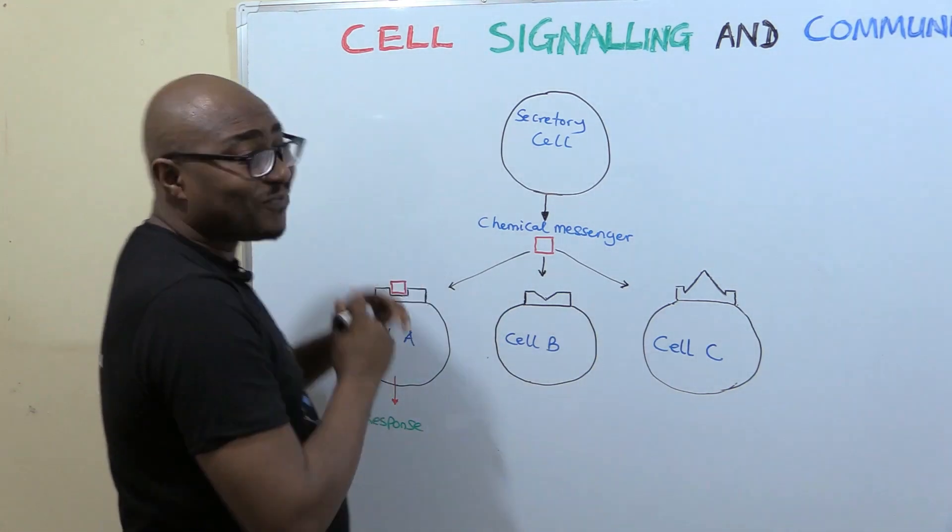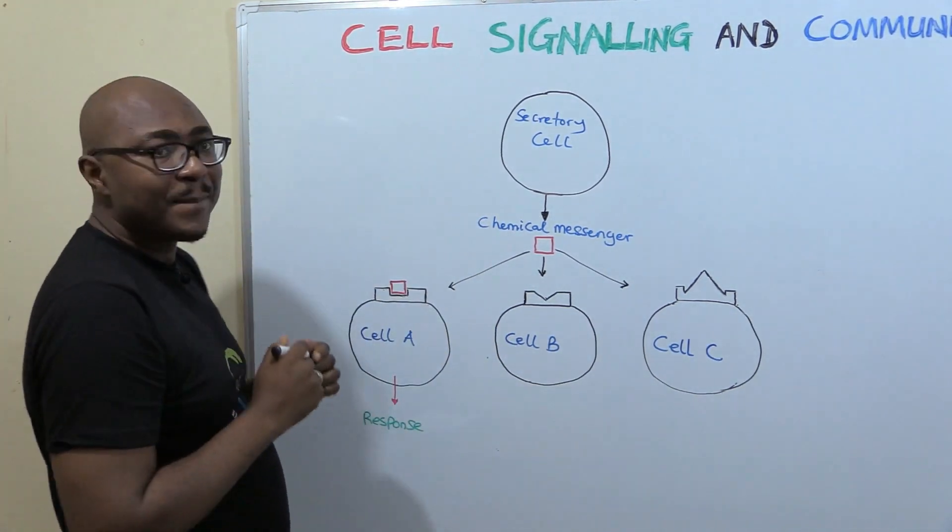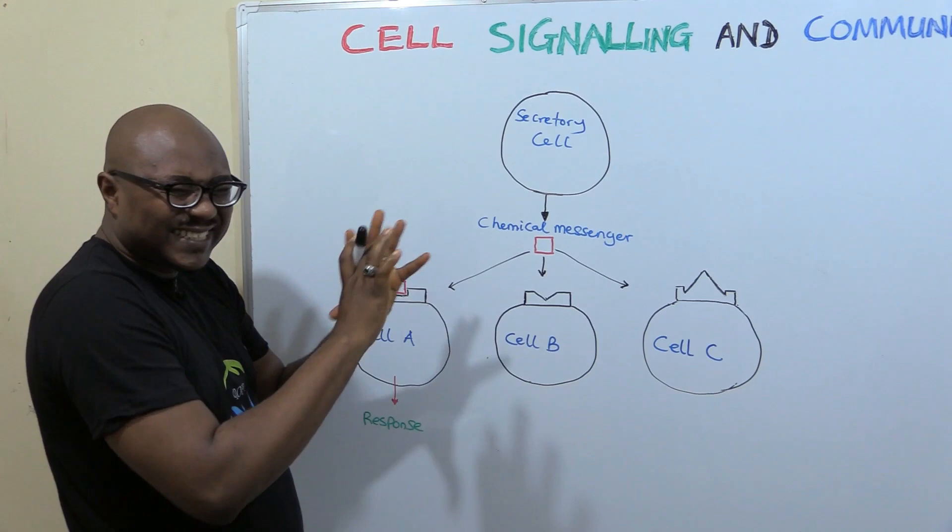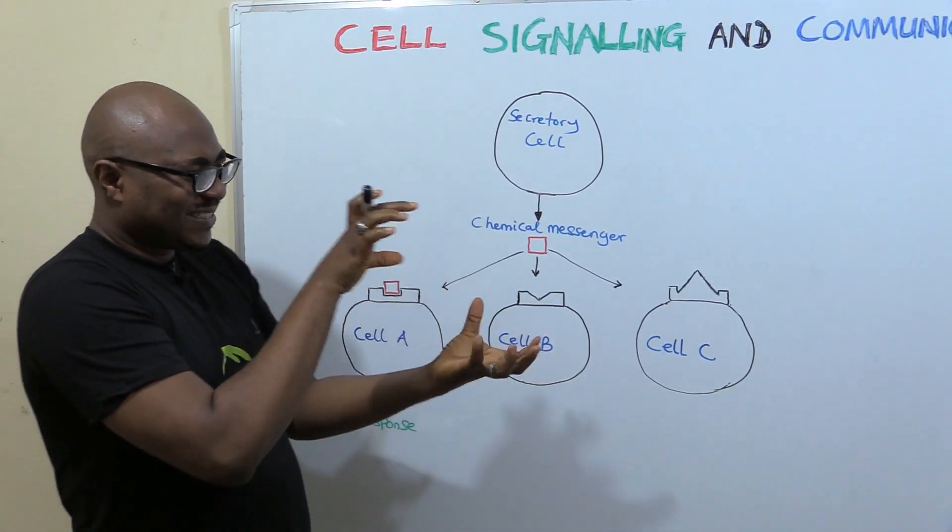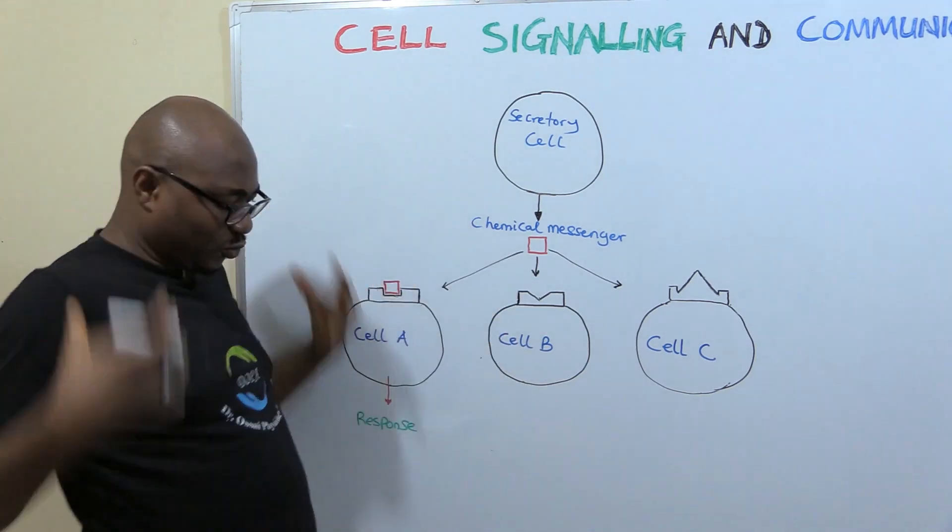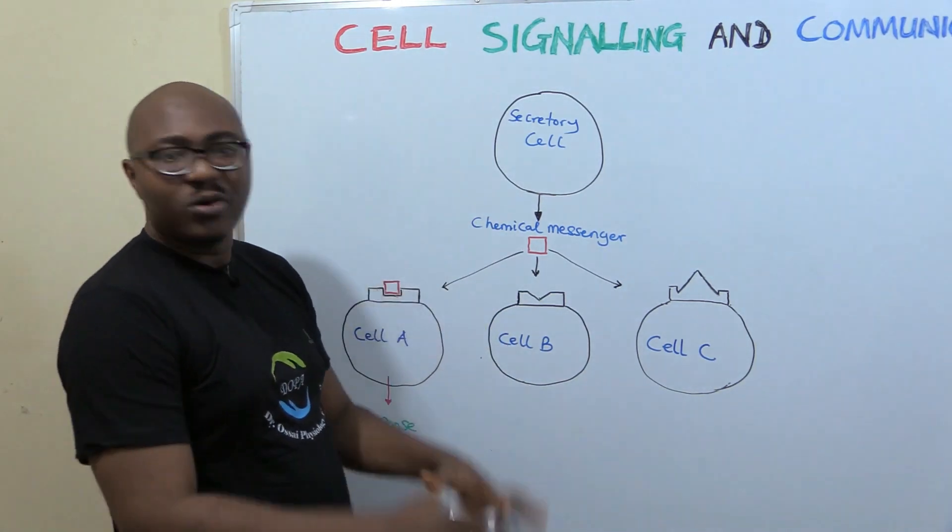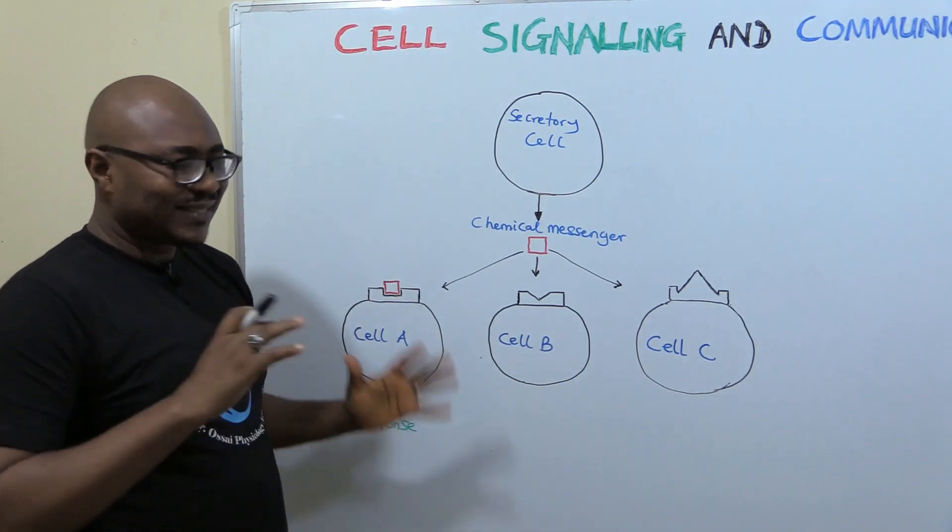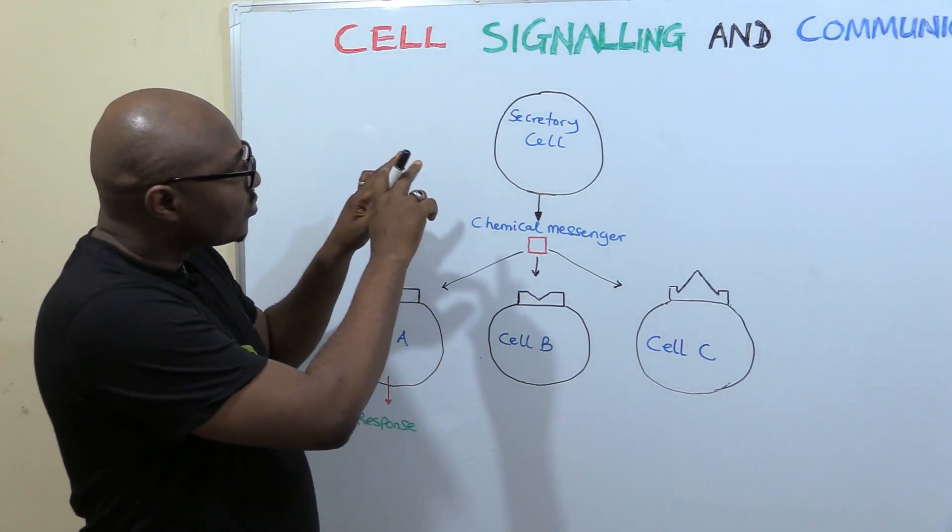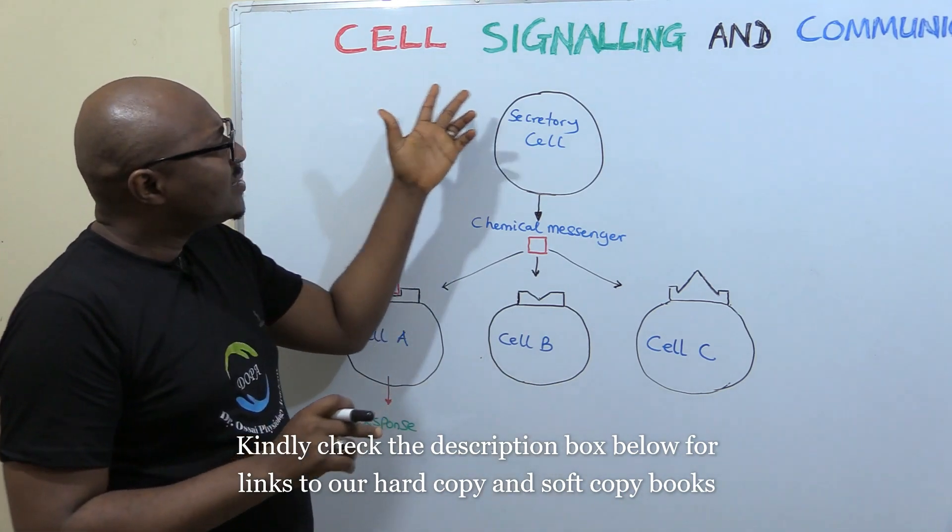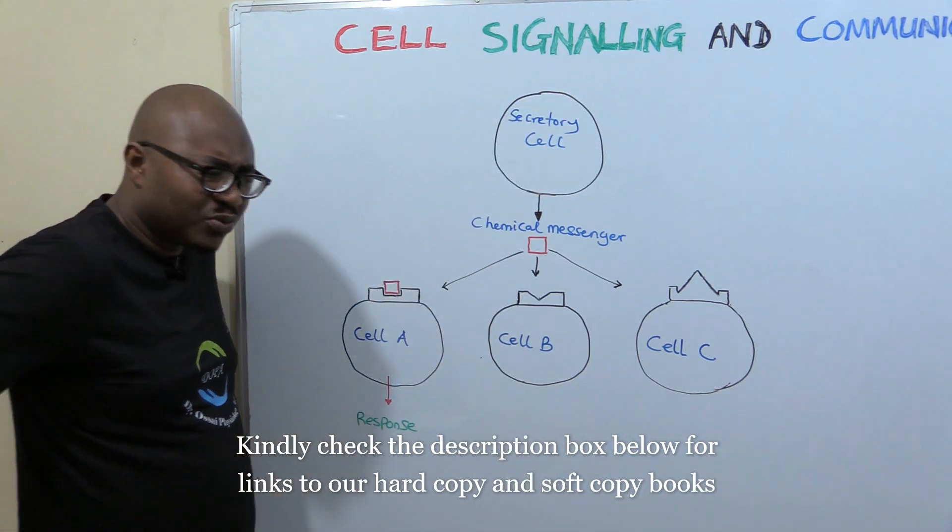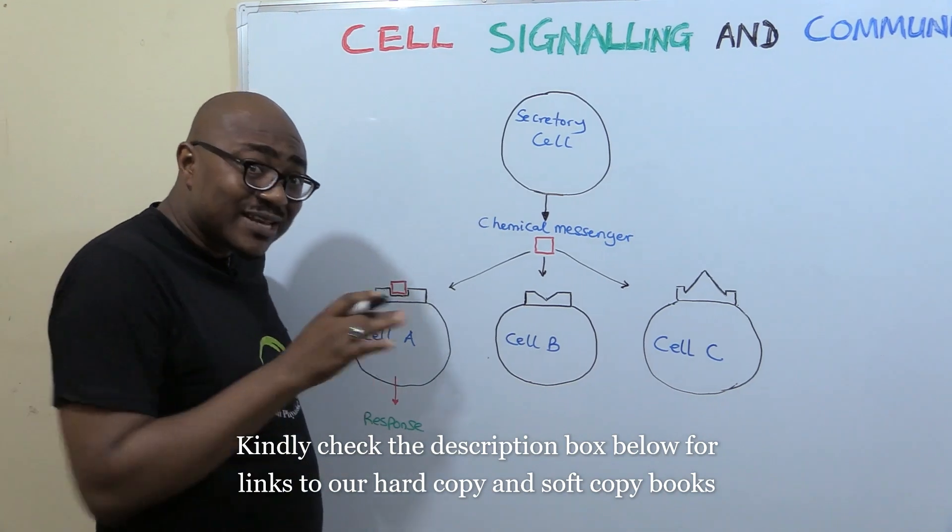All right, let's get started. So today we're going to be dealing with something very vital to physiology, cell physiology. When we're looking at physiology, we look at it from the cellular perspective and also from the systemic perspective, the whole organism, how the different parts interact. But now we're looking at the cell, we're still on the cell and cell signaling and communication. You will be wondering to yourself, so cells communicate. How come?